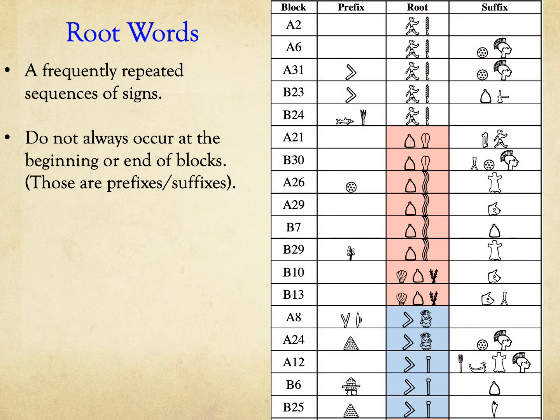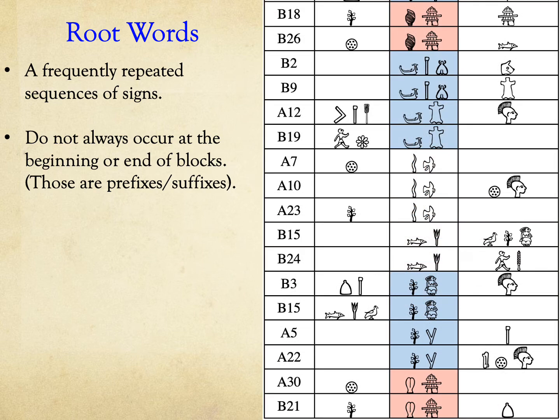For example, the walking man sign followed by the club sign occurs in five different blocks. Therefore, this pair of signs is a root word. The shield sign followed by a plumed-head sign always occurs at the end of blocks; hence, it is likely a suffix. If we change the reading direction, then it could be a prefix, but it still would not be considered a root word.